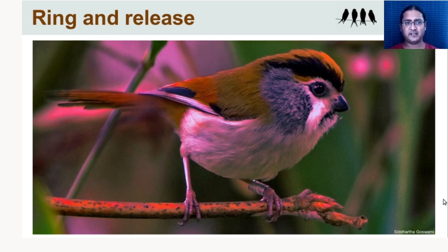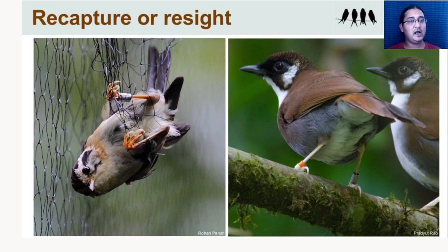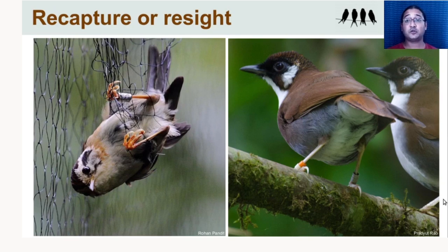Once birds have been ringed and released, there are two ways to get at population sizes. One is through recapture: you return to the same habitat, place nets in exactly the same locations, and get recaptures of previously ringed birds. Based on the number of recaptures versus fresh captures, you can get interesting information about populations. Another way is to color-band birds with unique color combinations — for example, orange and white on this gray-sided laughing thrush — so you can identify individuals with binoculars without needing to recapture them after the initial capture.